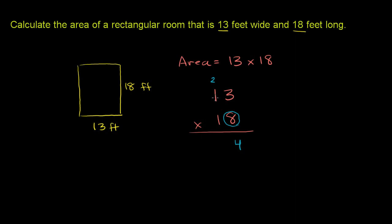8 times 1—now this 1 is really a 10. So 8 times 1 is 8, plus 2 is 10. And there's no other digits, so we can write the whole 10 down here. So we now see that 8 times 13 is 104.